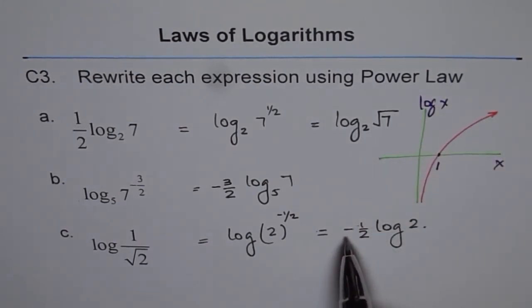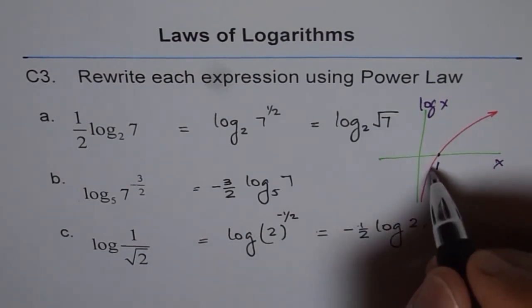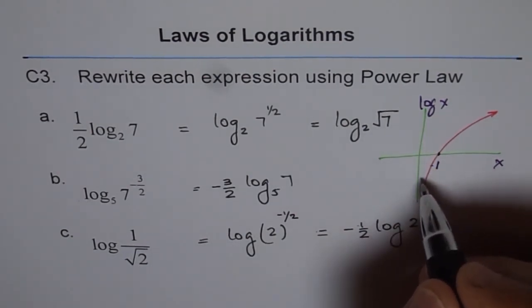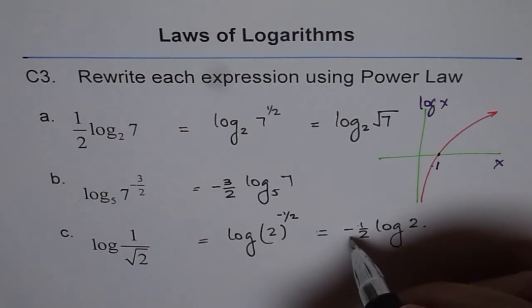So if you see a negative value, see this 1 over square root 2 is less than 1, so somewhere here on the negative side. And therefore, we get negative here. So that is how you can think about it.